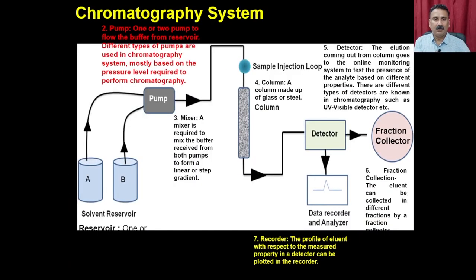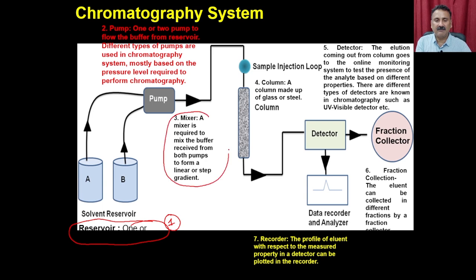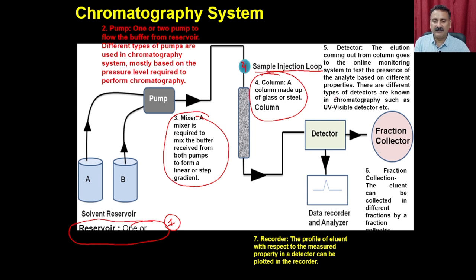Apart from the column, a chromatography system includes multiple components: (1) reservoir, (2) pump, (3) mixer, (4) sample injection ports, (5) column, (6) detectors, (7) fraction collector, and (8) recorder, all used to run the column and monitor elutions.